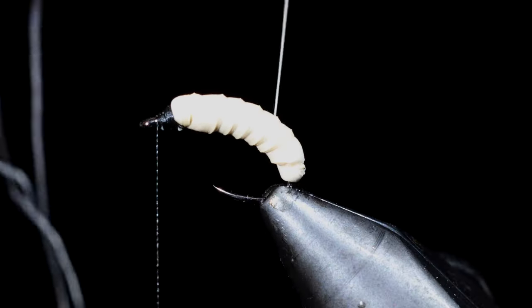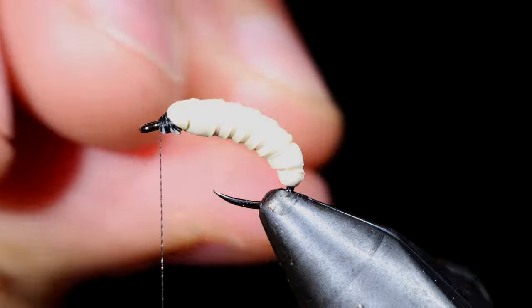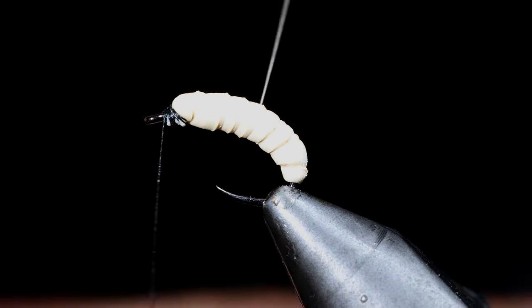Once happy, we'll grab our Vivas thread and we will use this to wrap over the segments that we just created, giving it a nice natural rounded look.